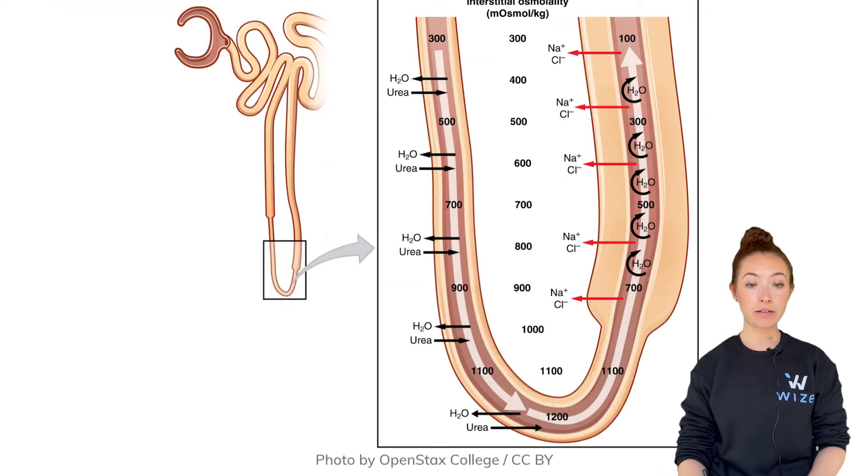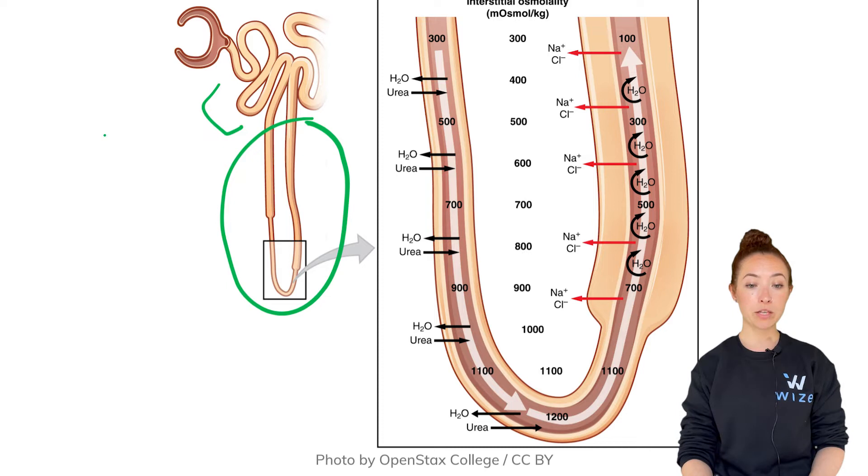When I say osmolarity gradient, this is what I'm talking about. This is the proximal convoluted tubule here, we have the loop of Henle—it's this entire structure that dips into the medulla. Notice how there is an osmolarity gradient here.